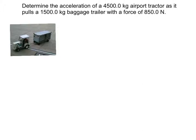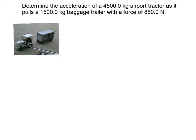Any time we are dealing with a problem like this, where we have two objects connected together, we need to consider the objects as a whole and then look at the objects separately as well. After reading through a problem once, I like to go back and underline the information given. I underline what the question is asking for in red — in this case, the acceleration of the airport tractor — and then in green I underline what is given: the mass of the tractor, the mass of the trailer, and the force at which the trailer is being pulled.